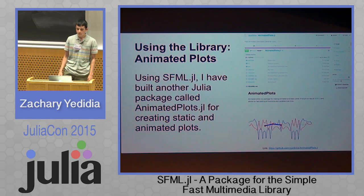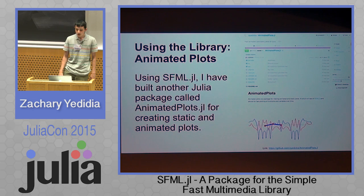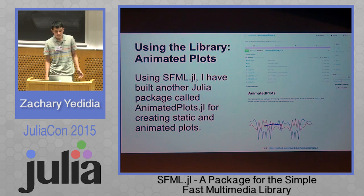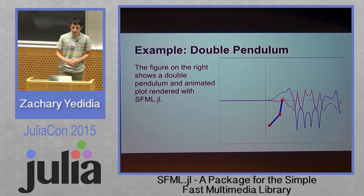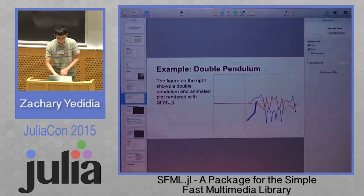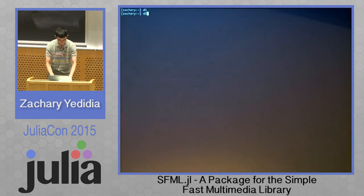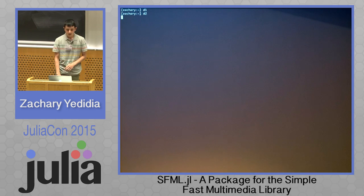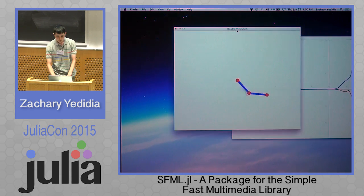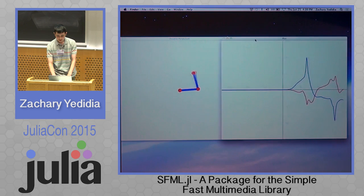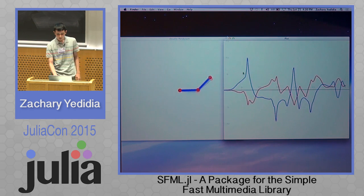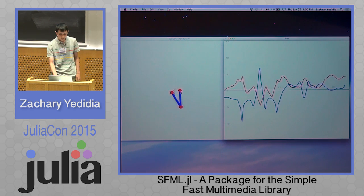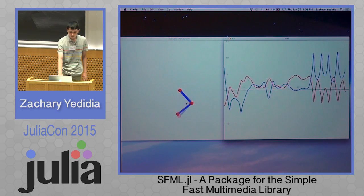Using the library, I've made a package called Animated Plots. It's more of a proof of concept, but it lets you create static and animated plots, so you can plot things over time. An example of this is a double pendulum demo. There are two windows: one has the double pendulum running, and the other is an animated plot of the angular velocities of the two joints. The blue plot is the angular velocity of the center joint, and the red plot is the angular velocity of the middle joint.